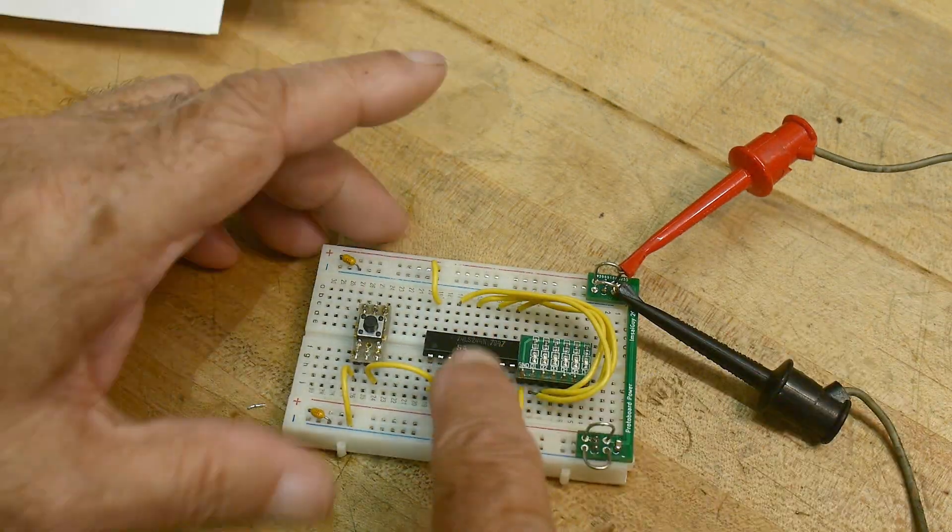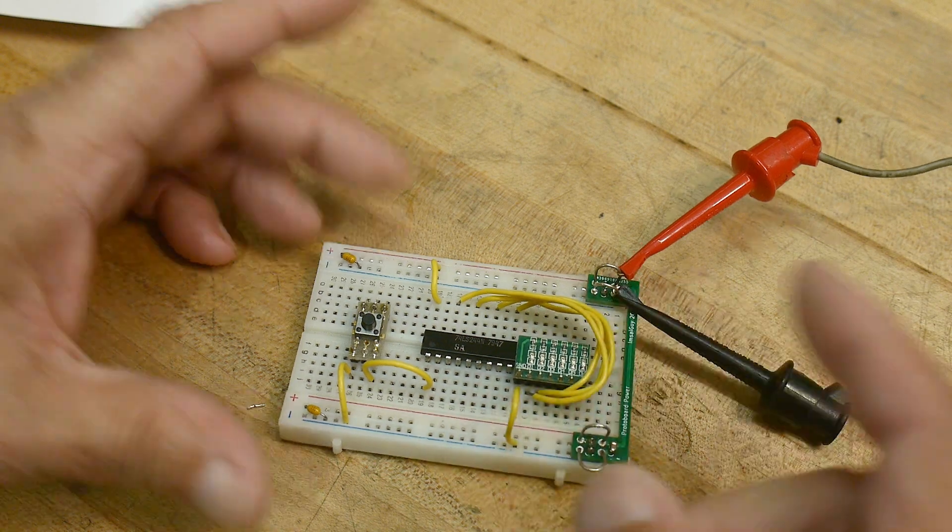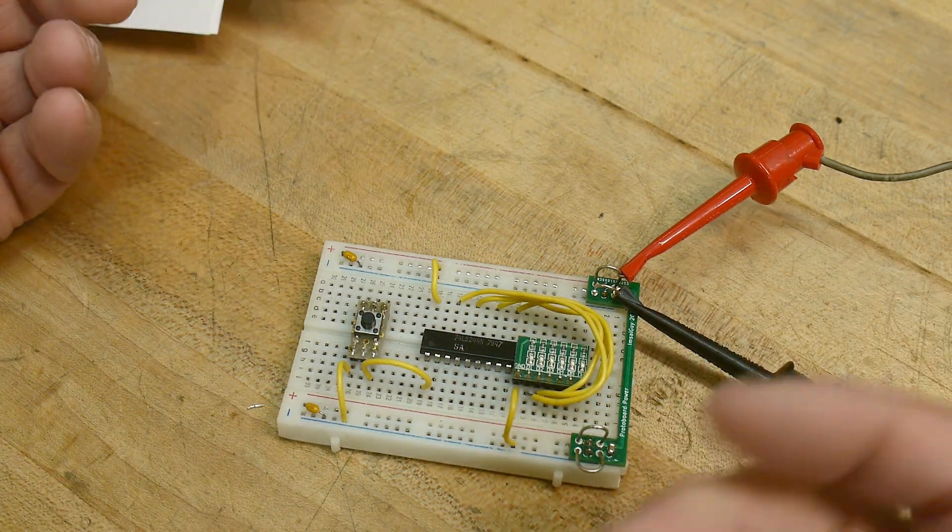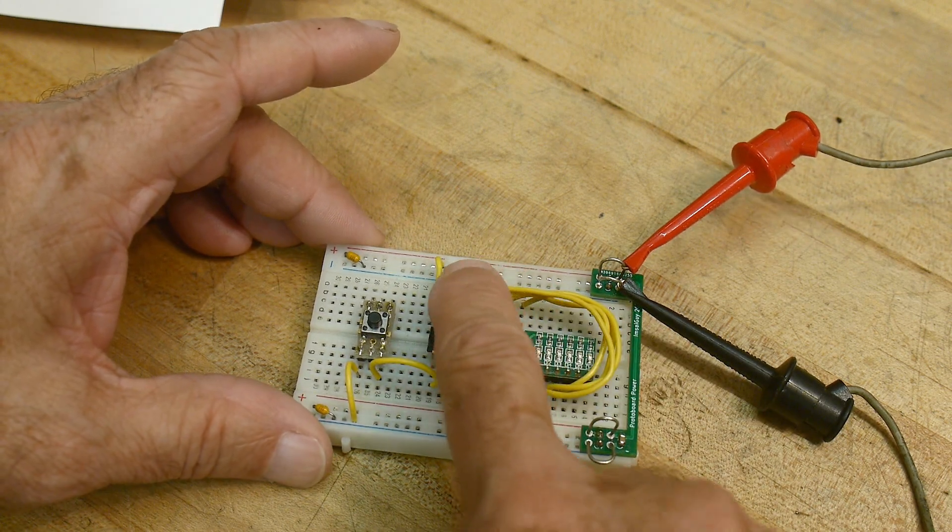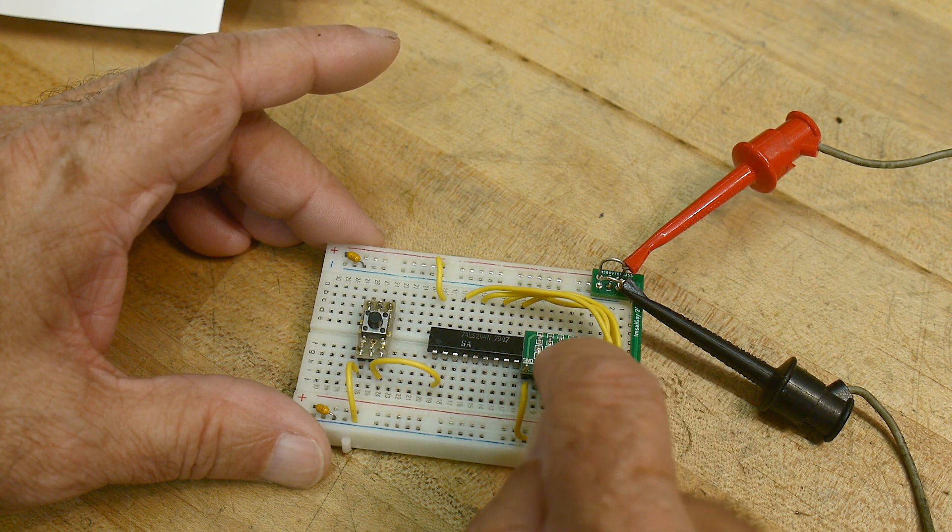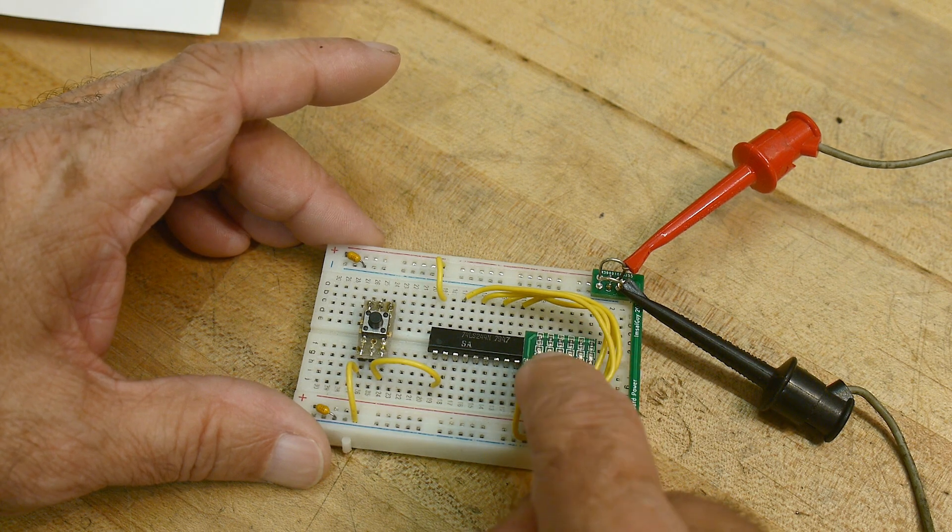All right. So, I have the part hooked up, and we're going to be looking at one half of the part. Remember, it's four bits and four bits. We'll just be taking a look at one of those.